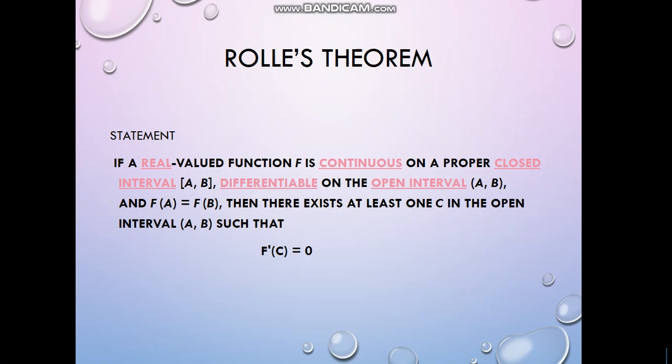If there is a real valued function which is continuous on a closed interval and differentiable on an open interval, and the endpoint values of the function are equal, then there will definitely be a point at which the derivative of the function is zero. In the open interval, you look at the intermediate value where the derivative is zero — endpoints are not included.